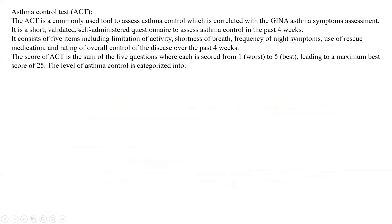What is ACT? It is a short, validated, self-administered questionnaire to assess asthma control in the past four weeks. Unlike GINA, which consisted of four items, ACT consists of five: limitation of activity, shortness of breath, frequency of night symptoms, use of rescue medication, and rating of overall control of the disease over the past four weeks.